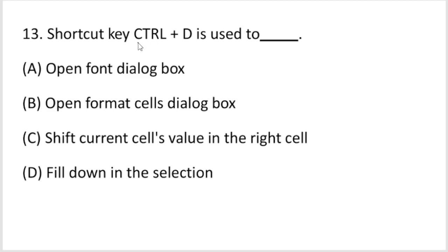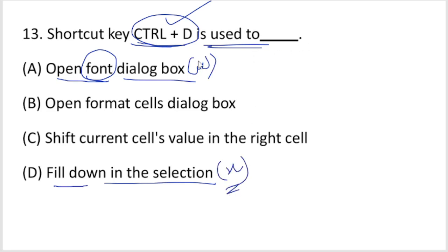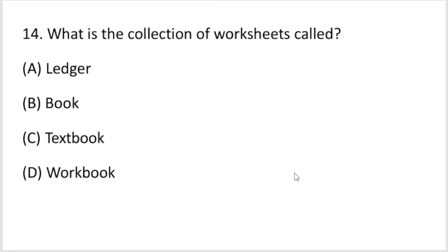Question 13: Shortcut key Control plus D is used to what? In Microsoft Word, it opens font dialog box. In Microsoft Excel, it fills down in the selection. Option D, fill down in Excel, is correct. When you select a cell range, it fills down.